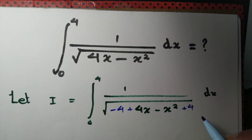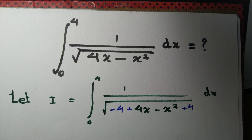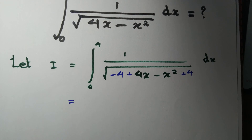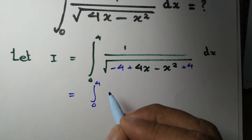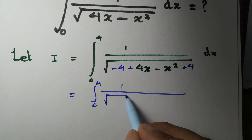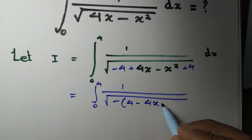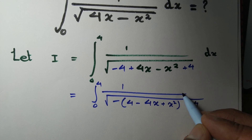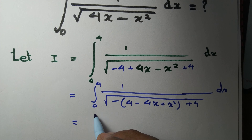We are not changing the value of the integral — we are just adding and subtracting 4. Now we make this expression a perfect square. We take minus common and we have minus(x squared minus 4x plus 4) plus 4, giving us 4 minus (x minus 2) squared. Is this a perfect square? Yes.